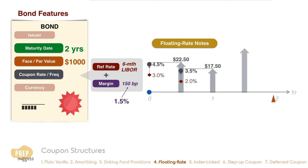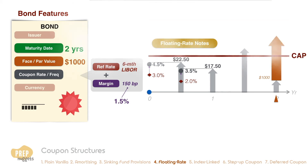On the maturity date, a balloon payment of the final coupon plus the principal amount of $1,000 is paid. A floating rate note may have a cap, which benefits the issuer by placing a limit on how high the coupon rate can rise.